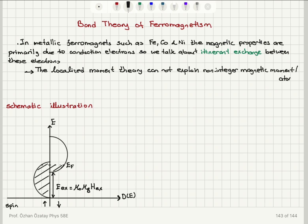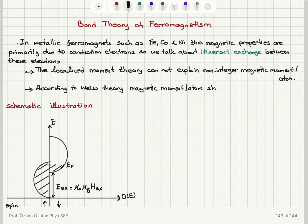Also, according to Weiss theory, the magnetic moment per atom must be the same whether it's in the ferromagnetic or paramagnetic phase. According to Weiss theory, which is based on the Langevin picture of localized moments, the magnetic moment per atom should be the same in both ferro and paramagnetic phases, which is not the case.